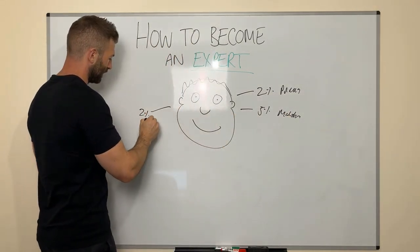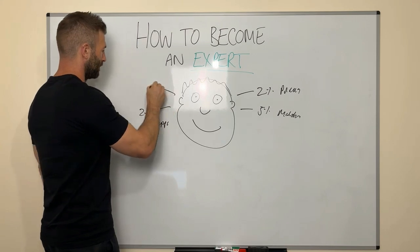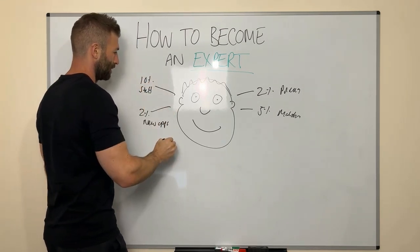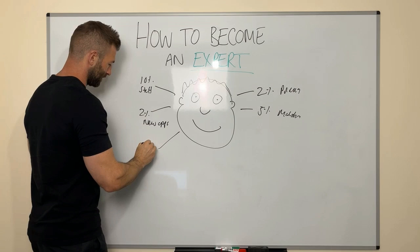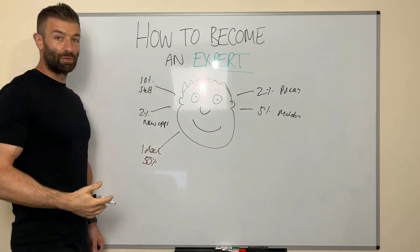And then ideas, fifty percent of your brain could be on that. Entrepreneurs, we've got a brain that works over time. We see something working, we go 'I can do that, we could do that better, we could do more of this.' You start thinking about other businesses.